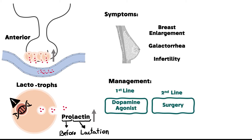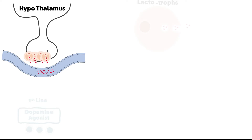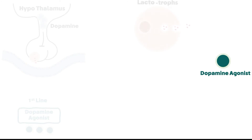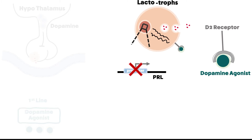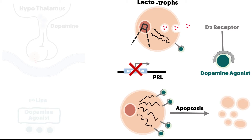This type of adenoma is treated with: first line, dopamine agonists; second line, surgery if there is no response; and thirdly, radiotherapy. Physiologically, the hypothalamus secretes dopamine to suppress prolactin production. The dopamine agonist is a chemical compound designed to bind with the dopamine type 2 receptor, suppressing transcription of the PRL gene. Multiple signals can also induce apoptosis of the cell.